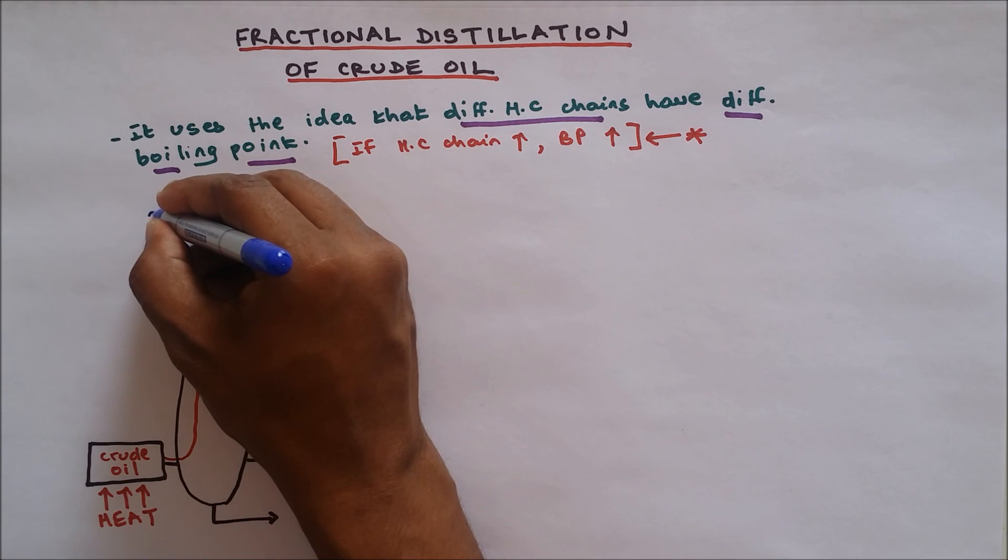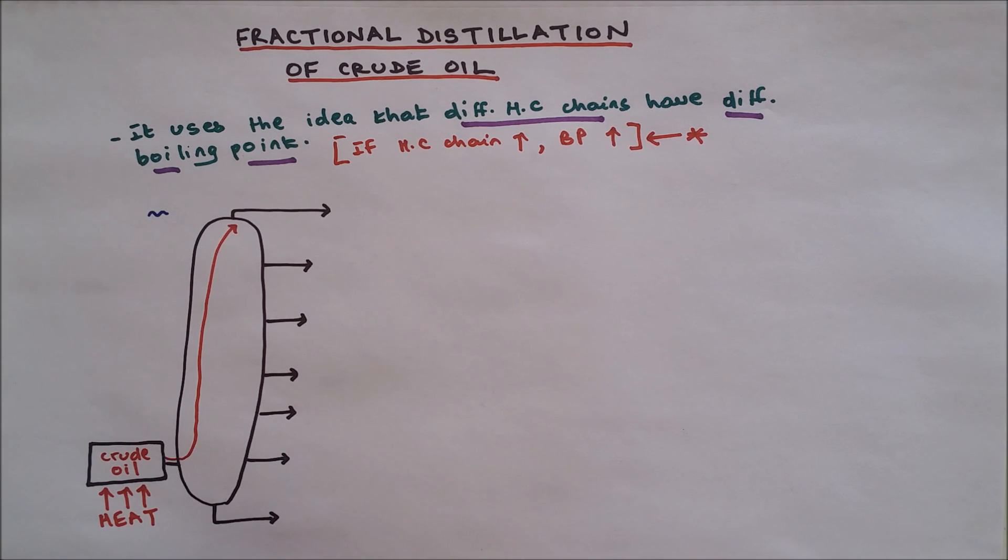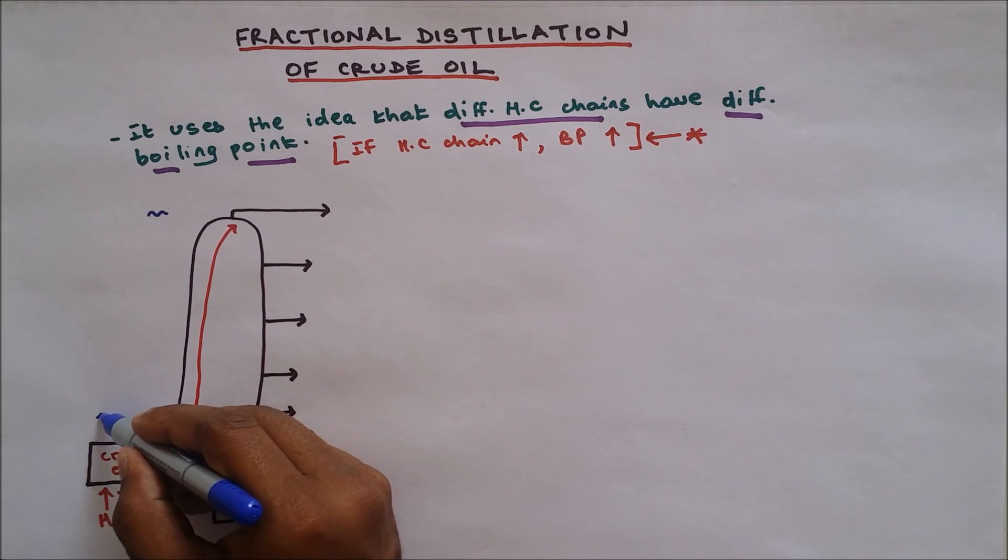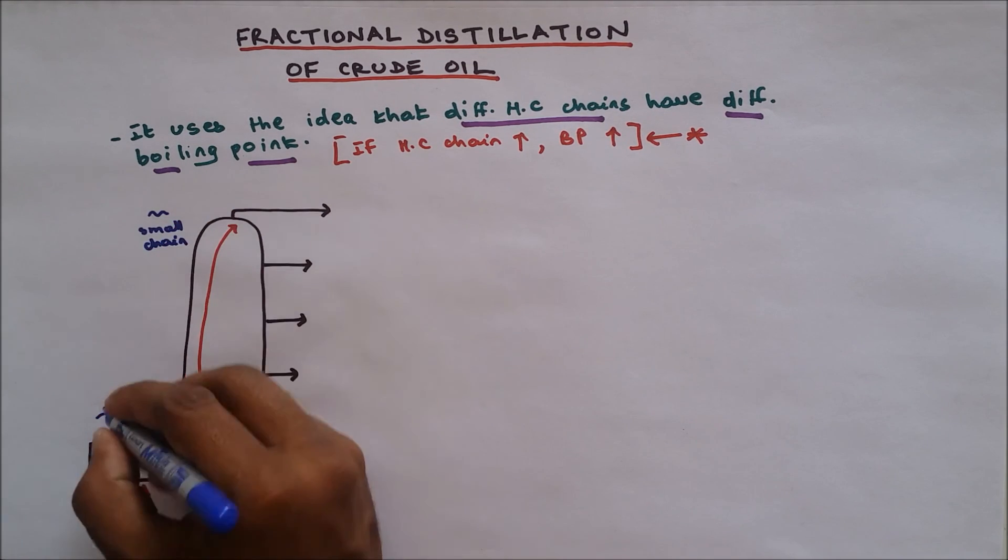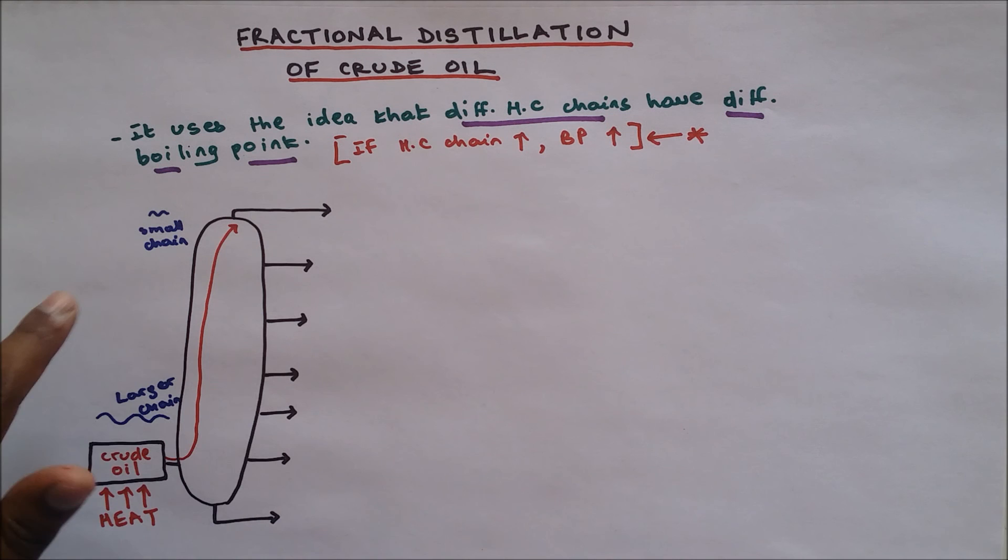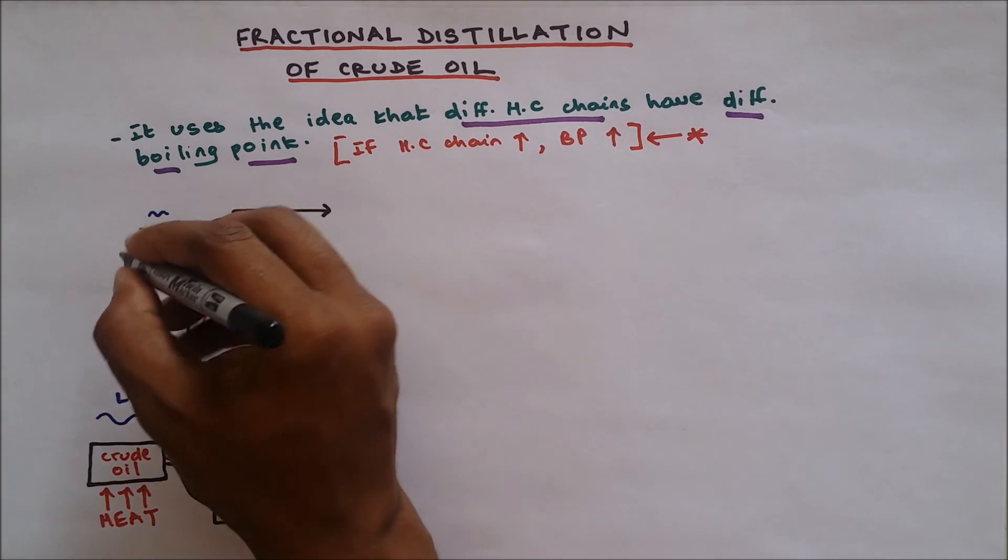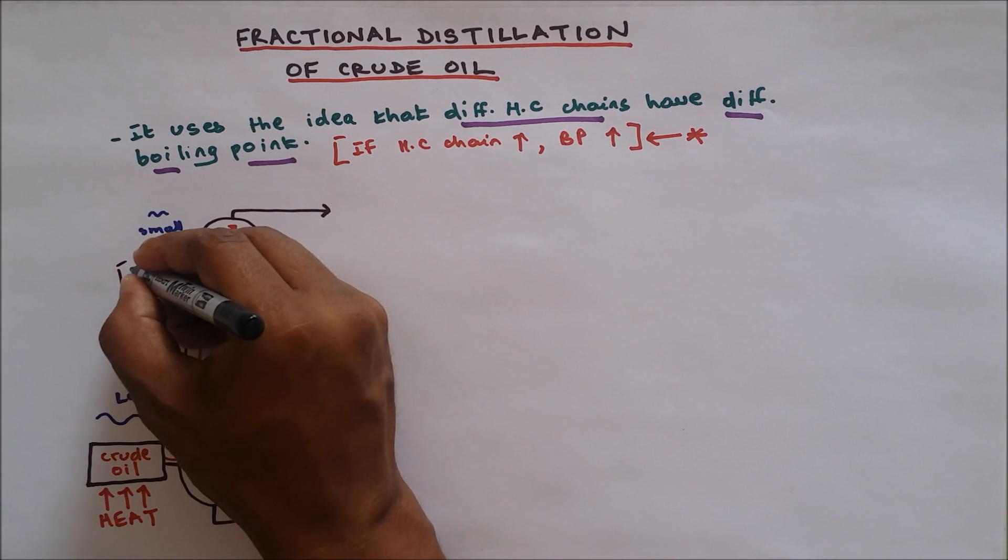In the top we're going to have small chains and at the bottom we're going to have larger chains. Small chains at the top and larger chains in the bottom region. Why? Because small chains have low boiling point and larger chains have high boiling point.